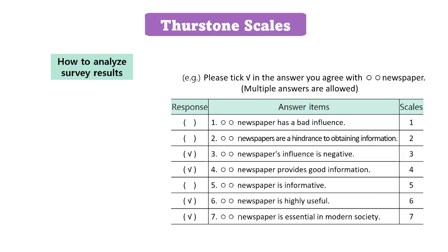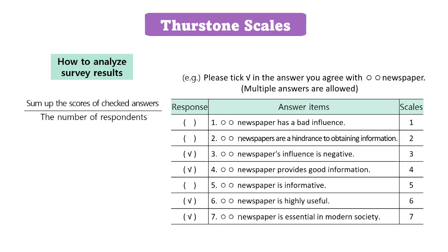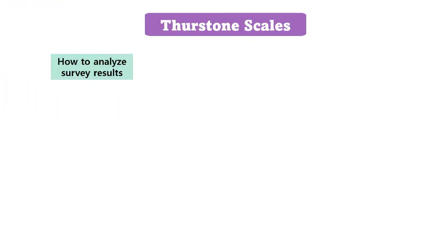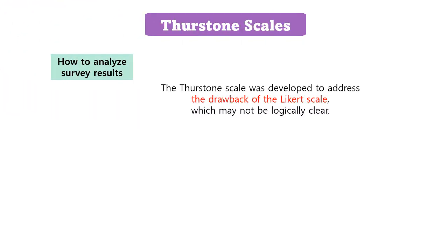When analyzing survey results, we can assess respondents' attitudes by summing up the scores of their checked answers and dividing by the number of respondents. For example, if a respondent answers 3, 4, 6, and 7 on the questionnaire, their attitude score would be 5 because (3+4+6+7) divided by 4 equals 5. Since the median is 4, a score of 5 would be classified as a positive attitude. The Thurstone scale was developed to address the drawback of the Likert scale, which may not be logically clear. In this sense, the Thurstone scale is also referred to as an equal appearing interval scale.